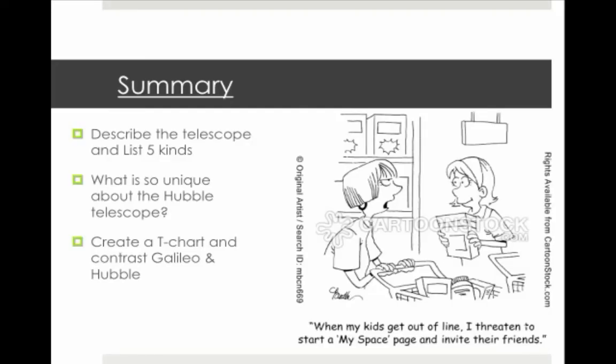Great, Summary Time, here we go. Describe the telescopes and list five different kinds. What is so unique about the Hubble Telescope and create a T-chart that contrasts Galileo and Hubble, so my two old dead dudes. Hope you enjoy the funny and I'll see you guys in class.